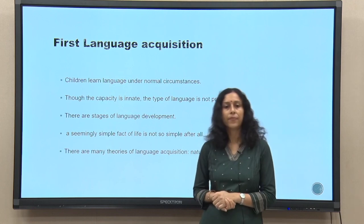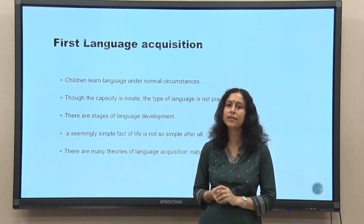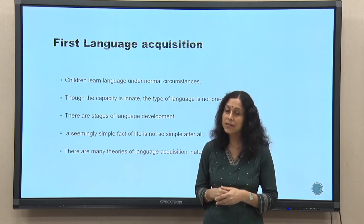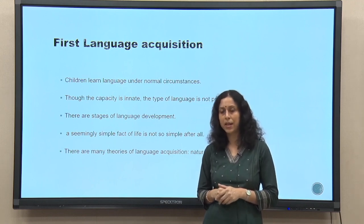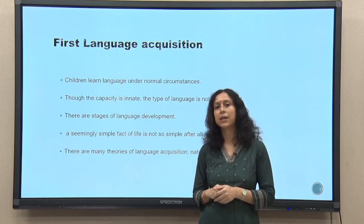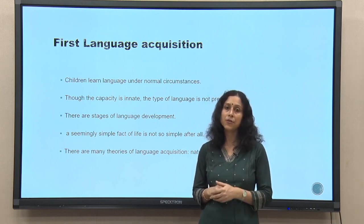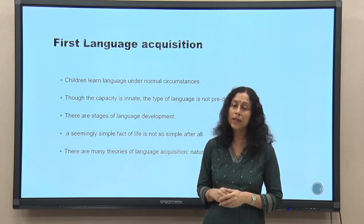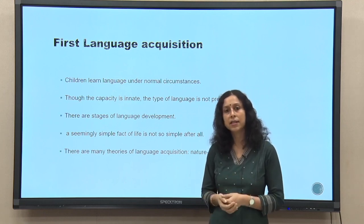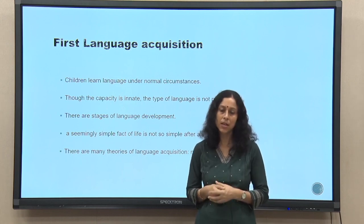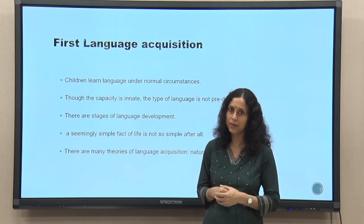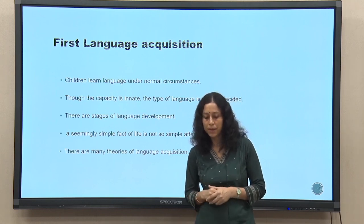First language acquisition: children learn language under normal circumstances — this is a no-brainer. Every normally developing child learns to speak and masters language within a very short period of time. It is understood that this capacity to learn language is innate; humans are born with the capacity to speak. Of course, as we have seen in the introductory lectures, language may not be entirely exclusively human, but largely the complexities of language manipulation might be human.